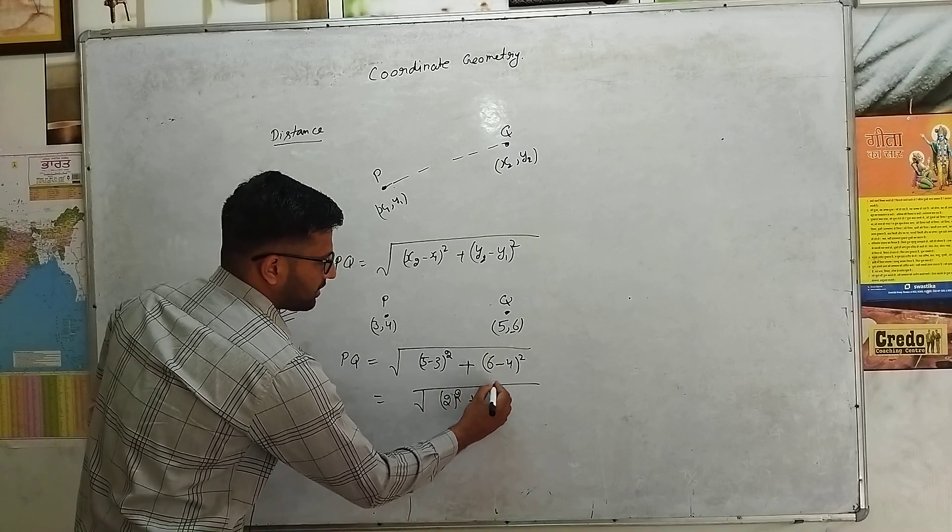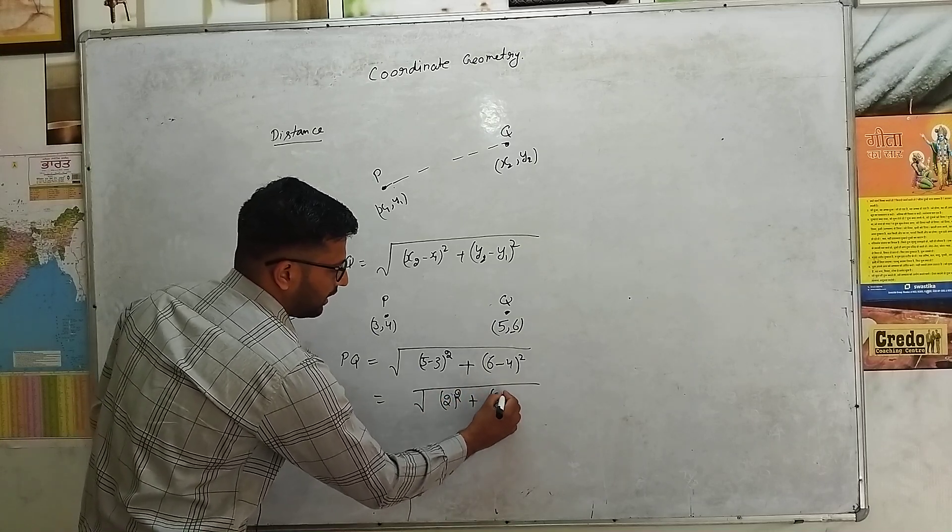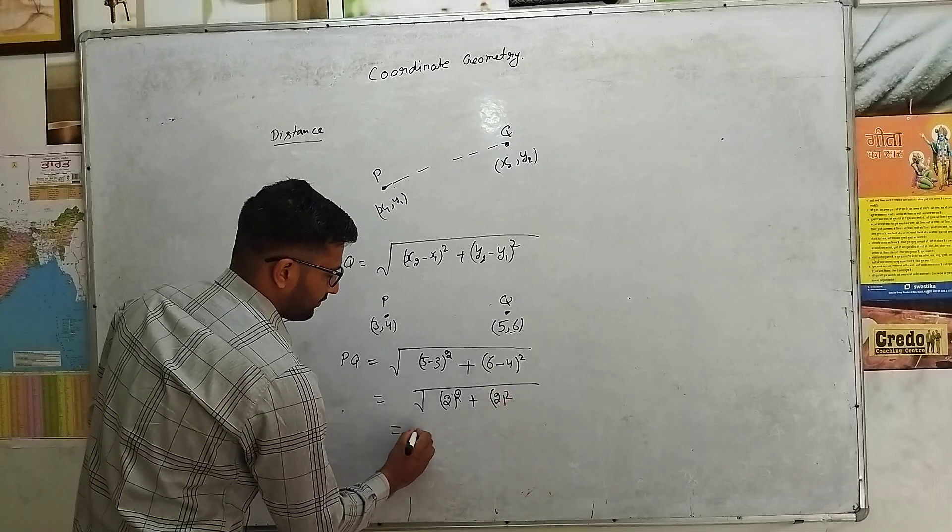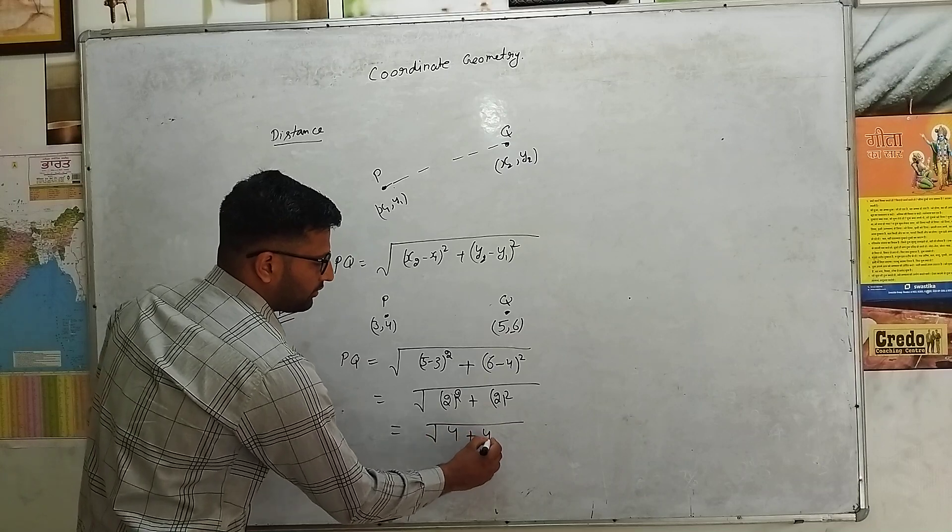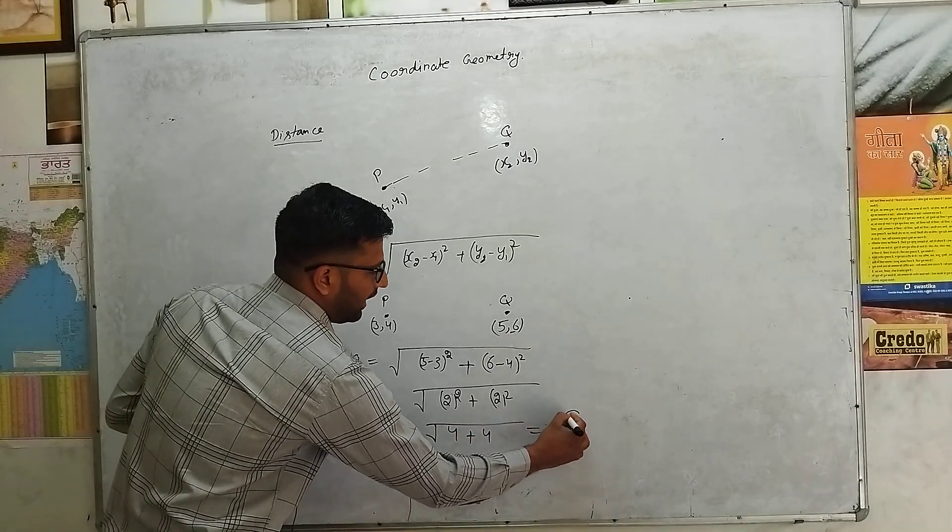6 minus 4 subtracting, 2 to the square. 2 to the square, 4 plus 4 is equal to 8. 8 to the square root, 2 root 2.